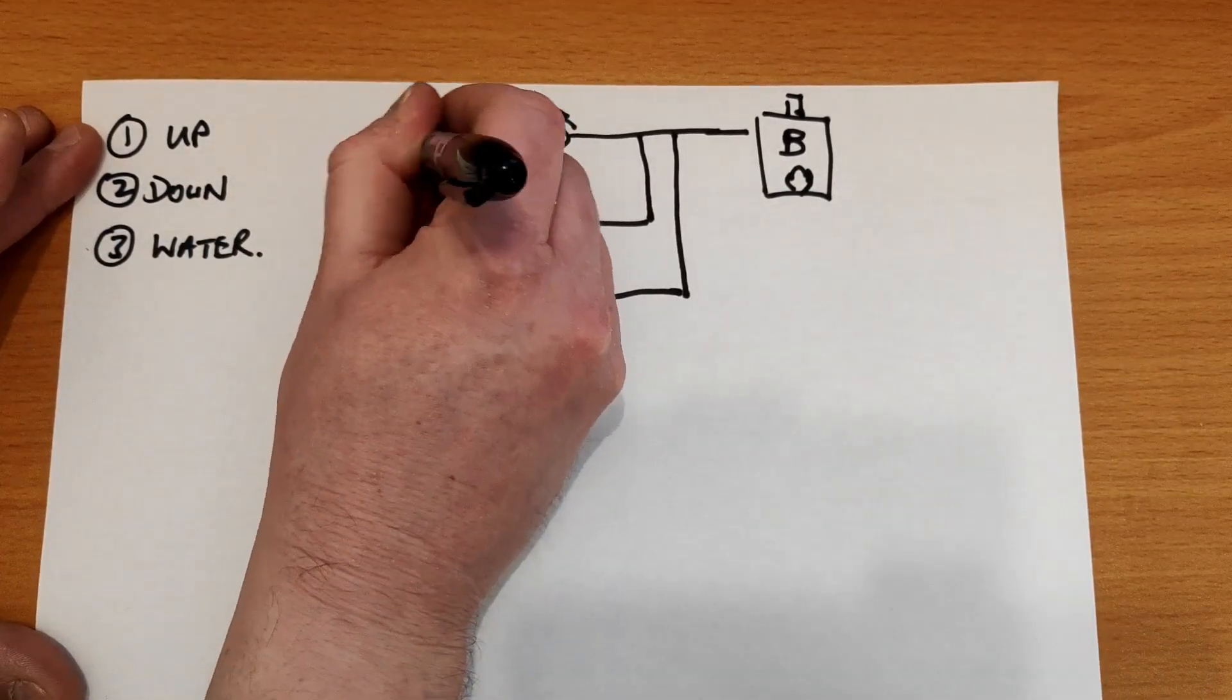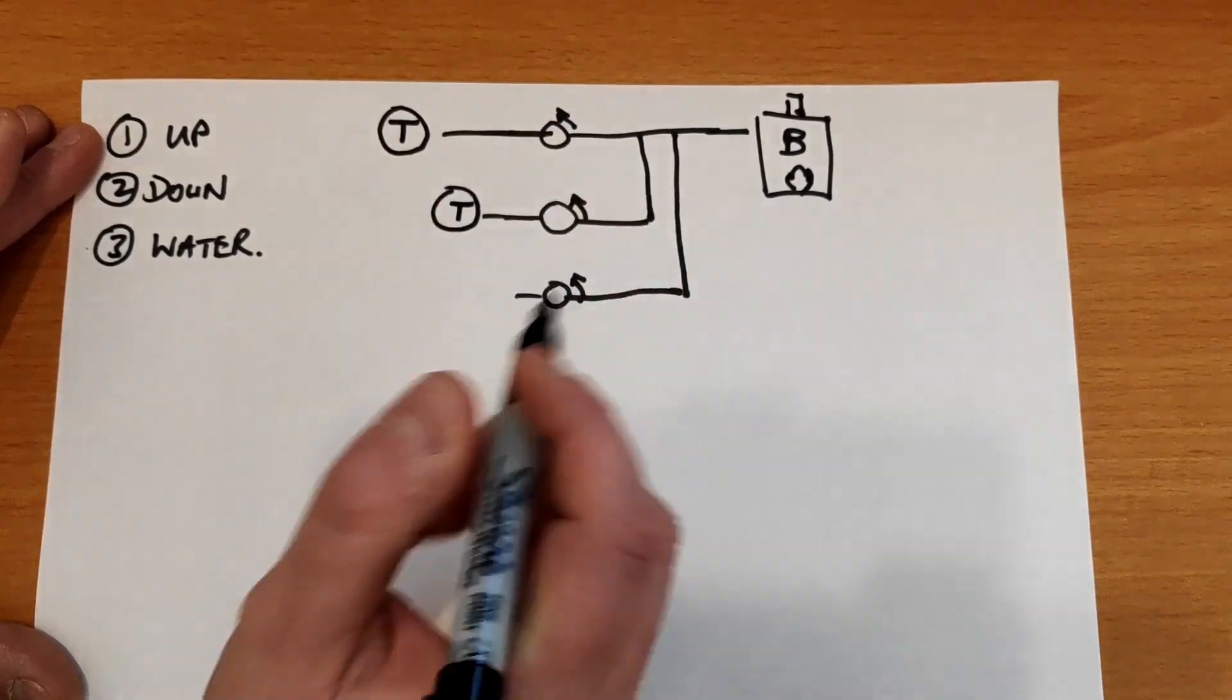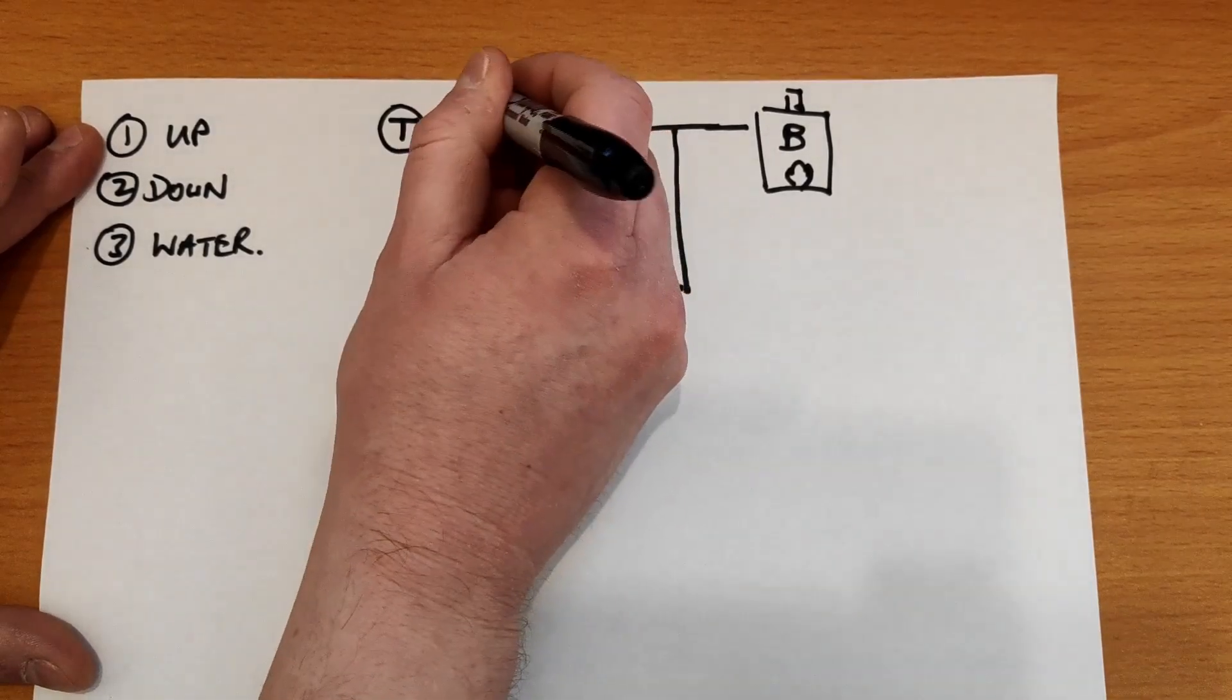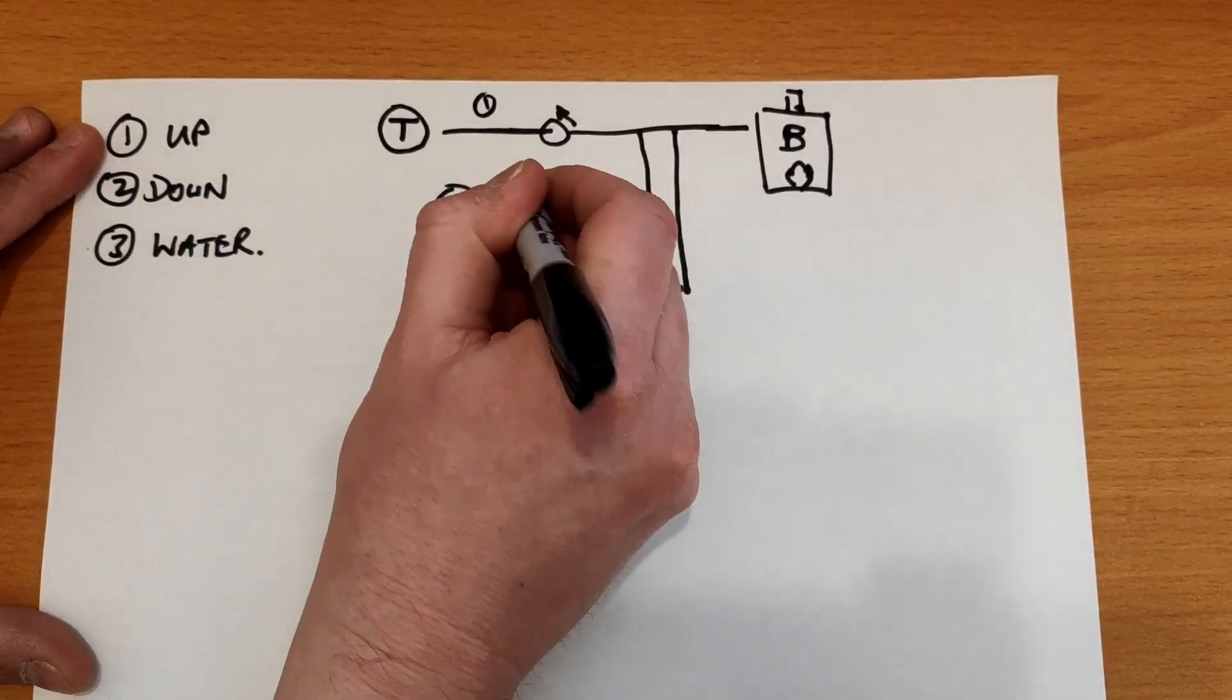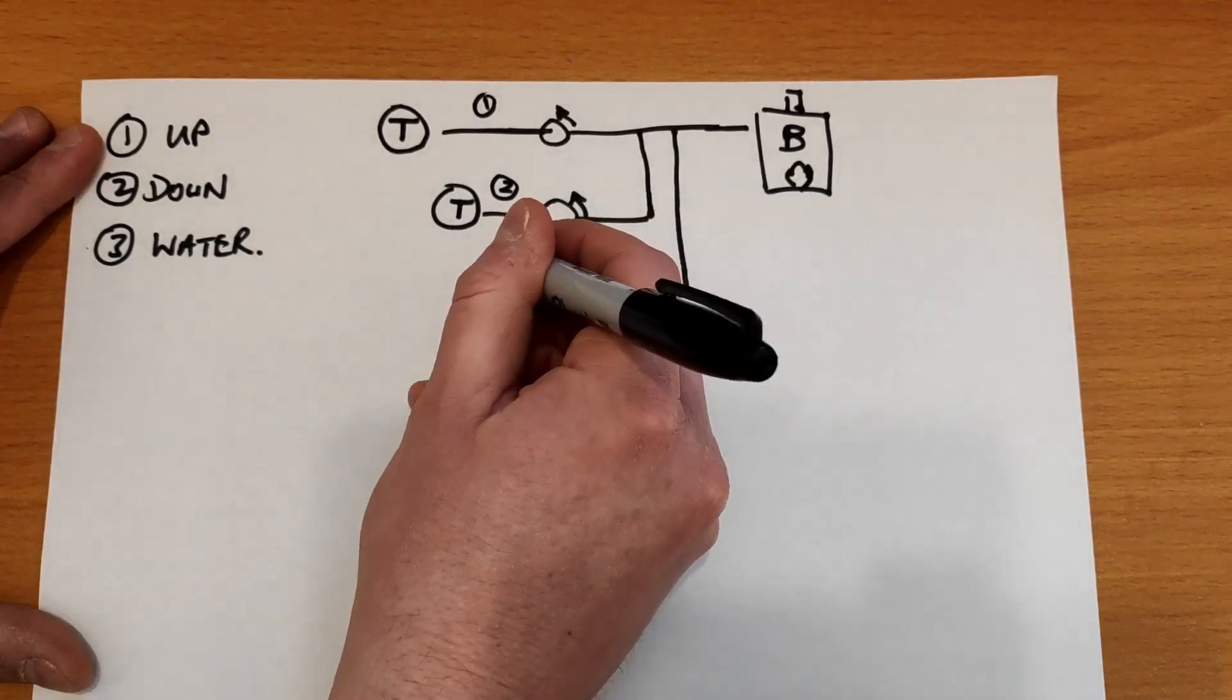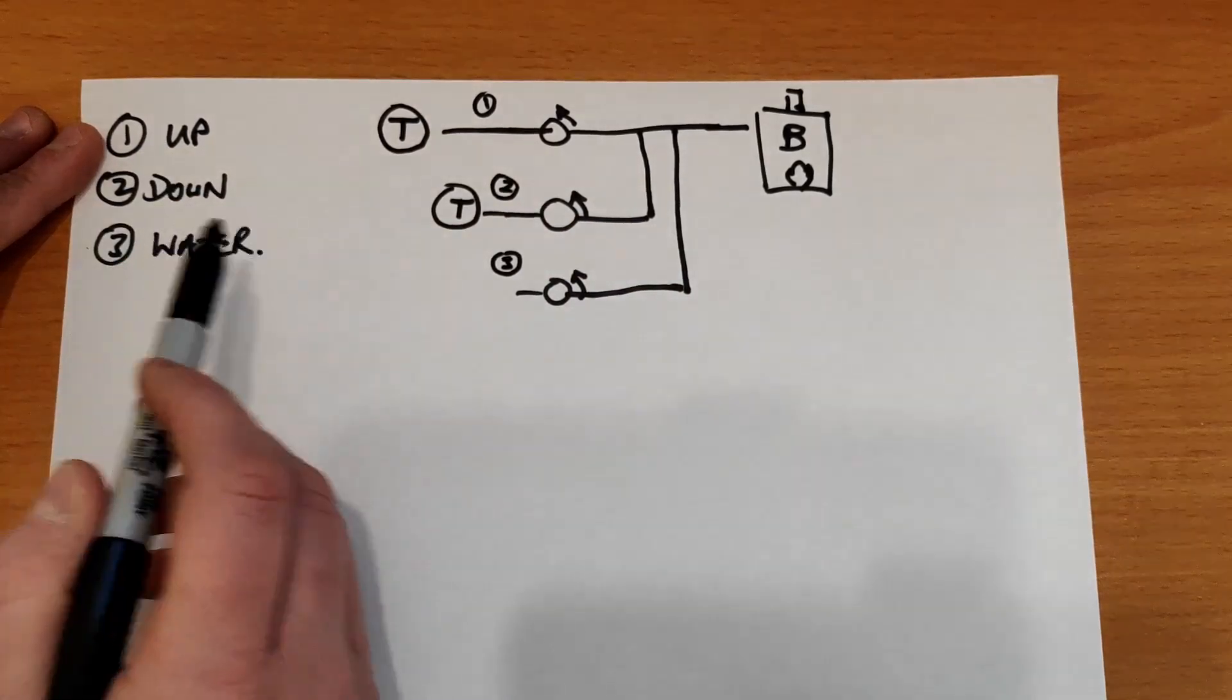So on each of the circuits then I also have a thermostat. On these I'm going to call this one the up circuit, this will be the down circuit which is for the home heating, and then I have the third circuit which is the water.